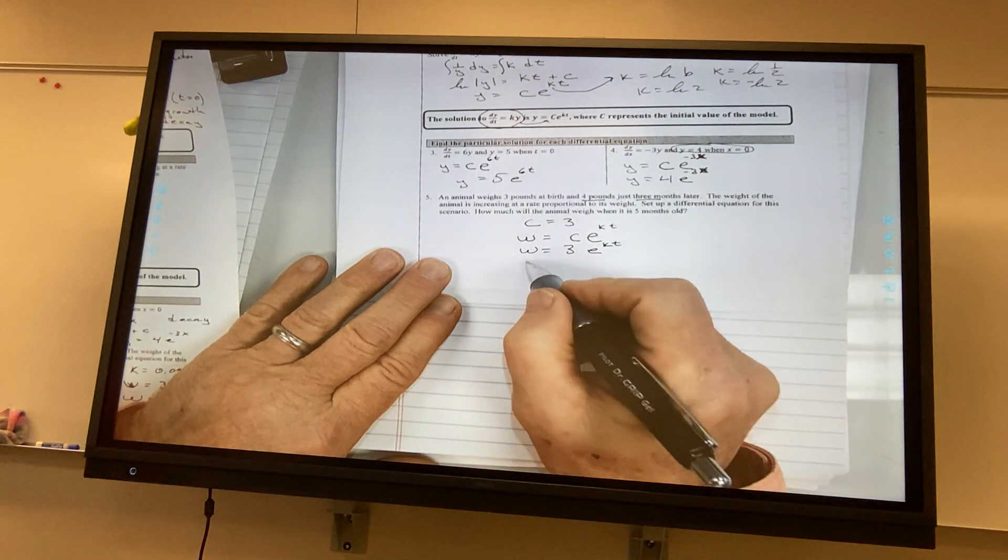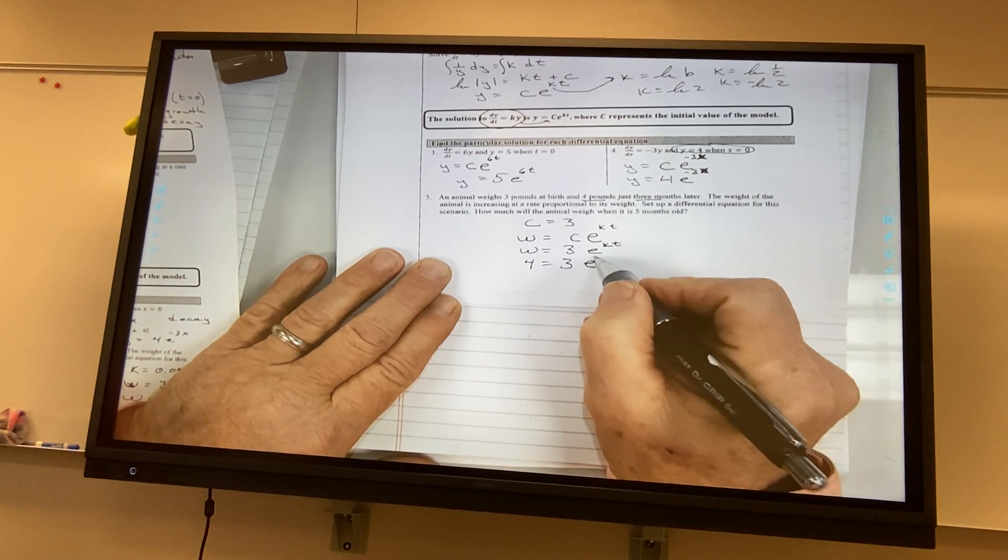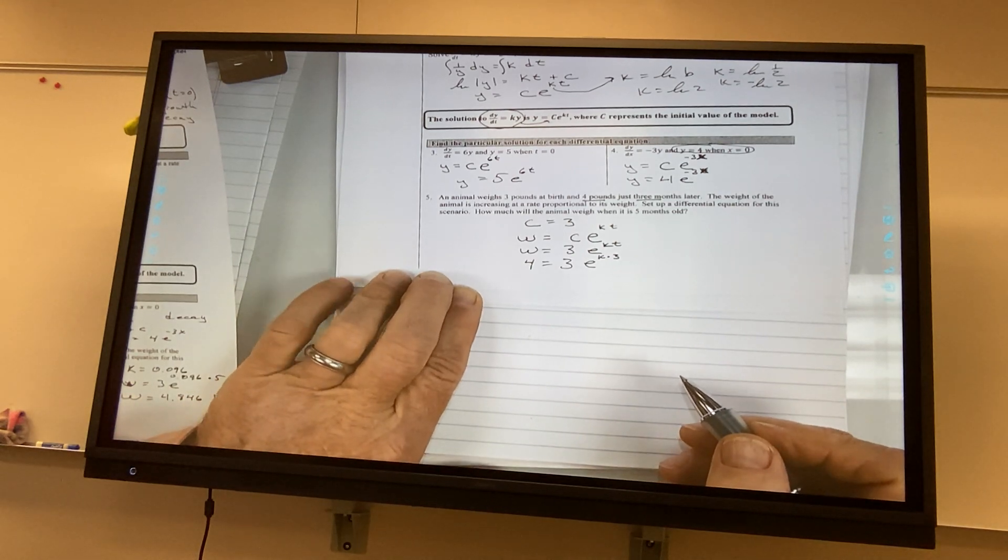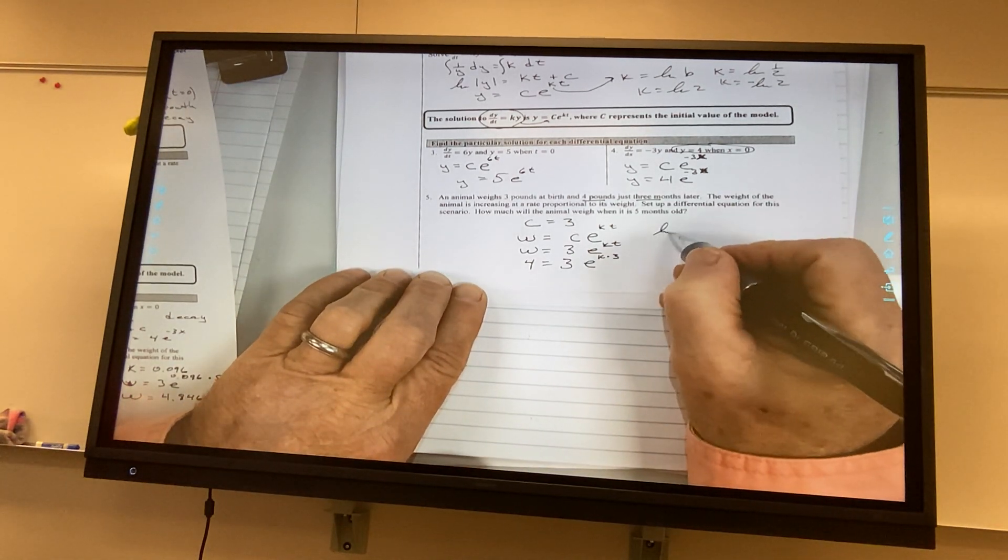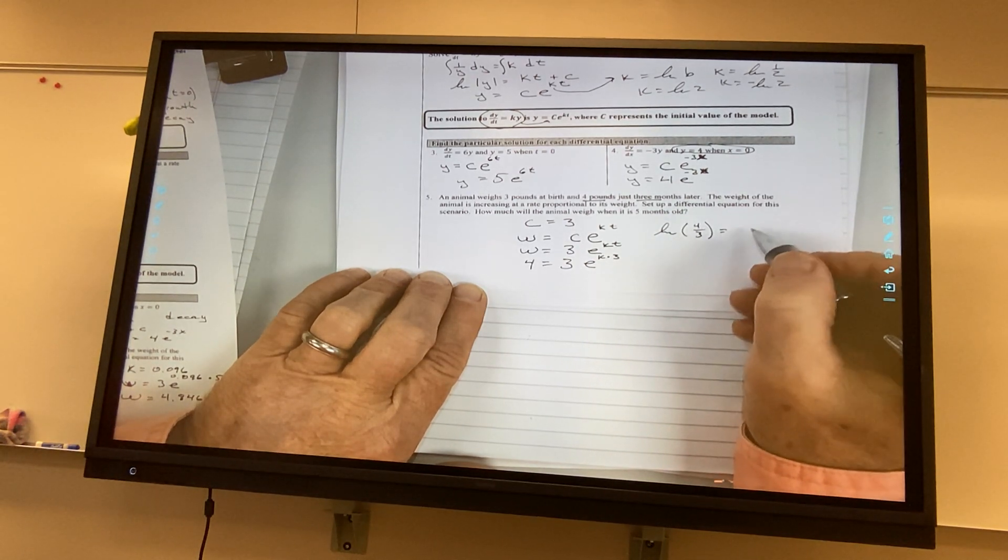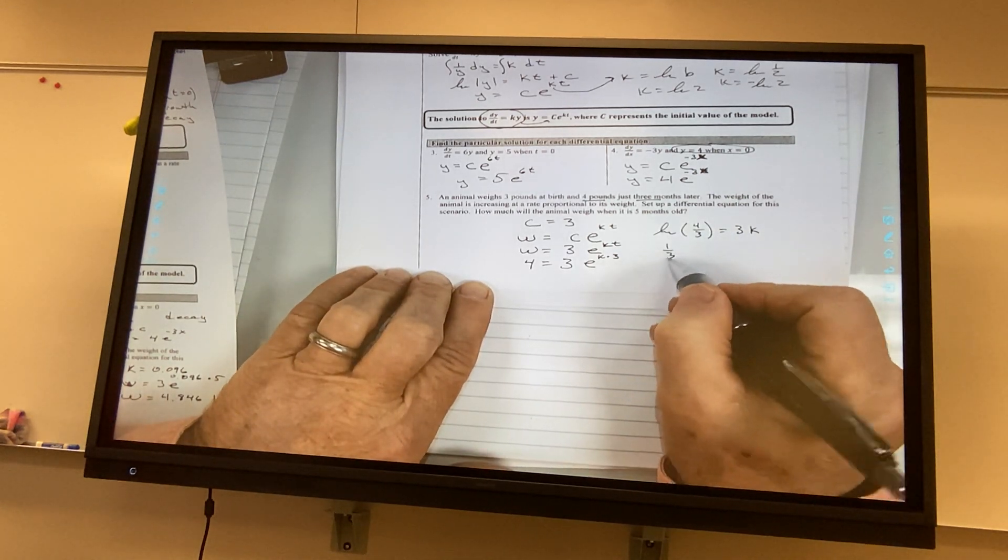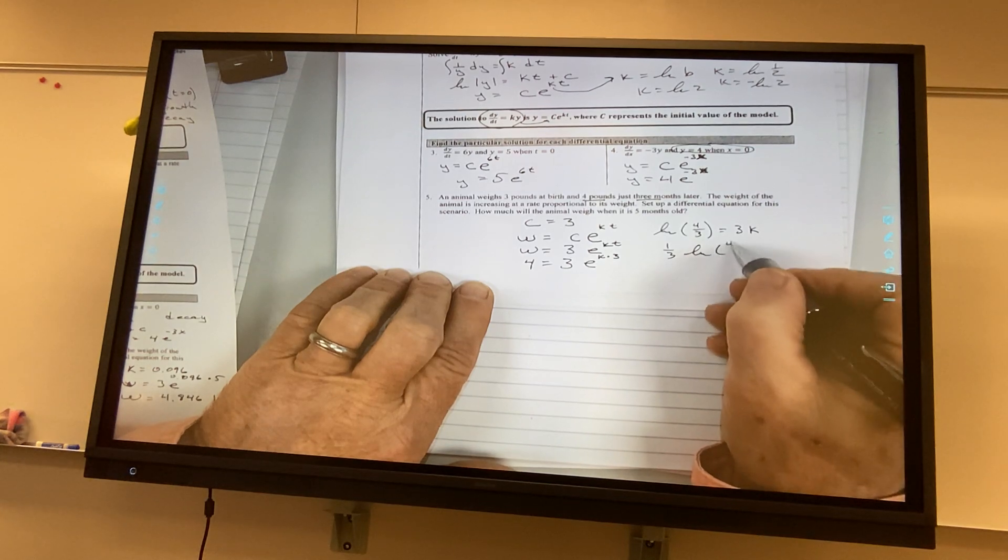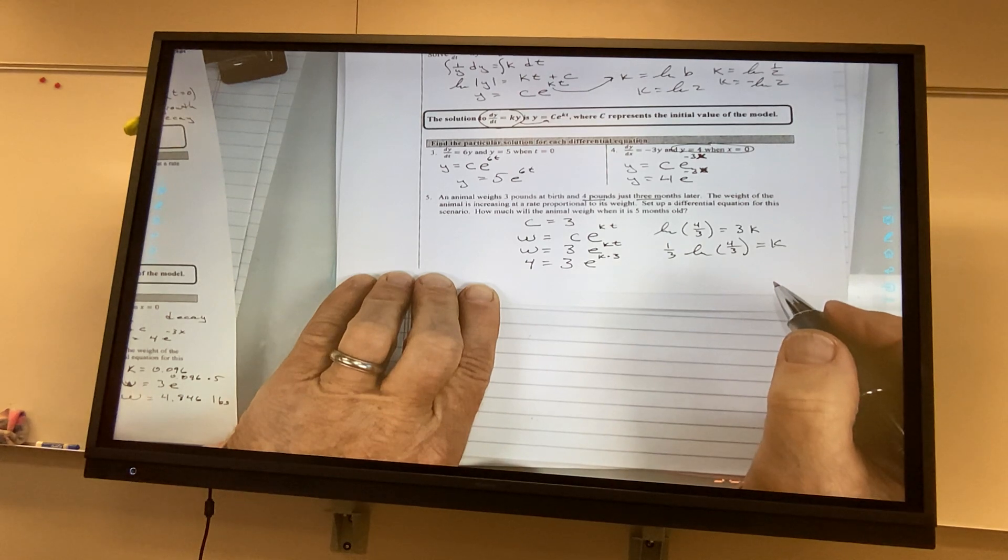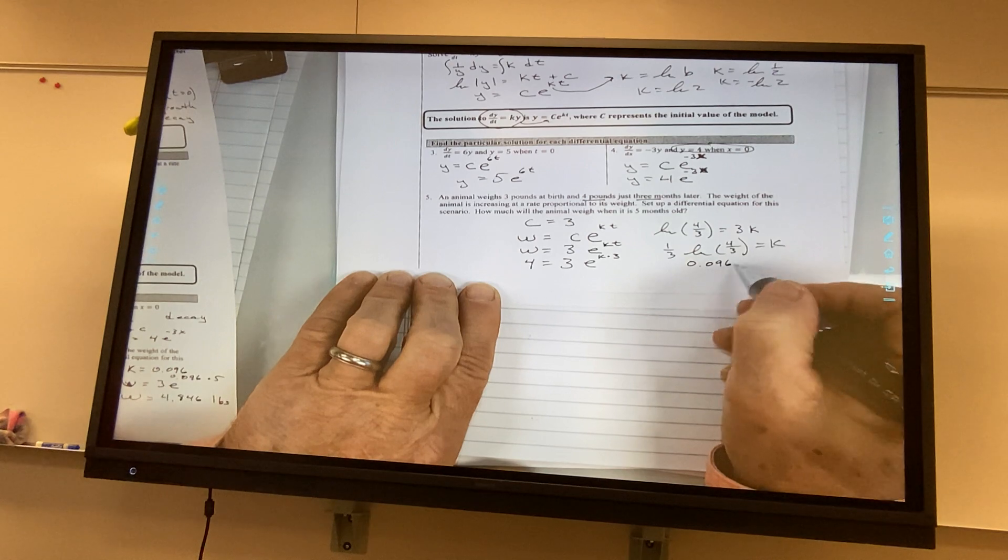So, 4 equals 3e to the k times 3, which means I have the ln of 4 thirds is equal to 3k. So, I have 1 third ln of 4 thirds is equal to k. And that was approximately 0.096 plus k.